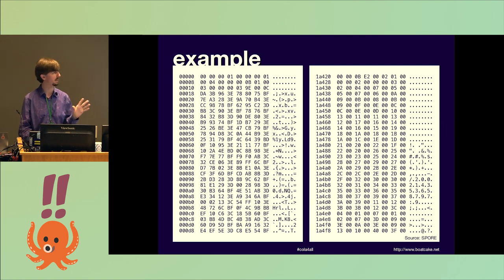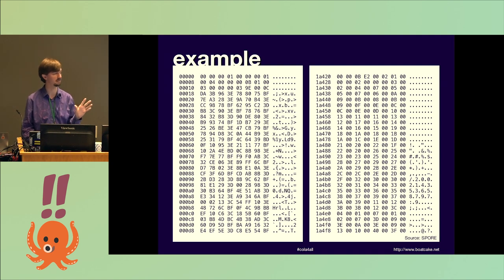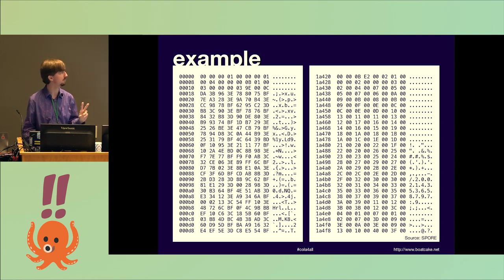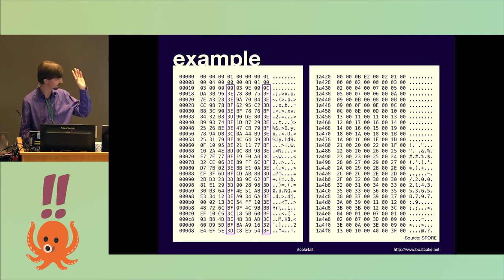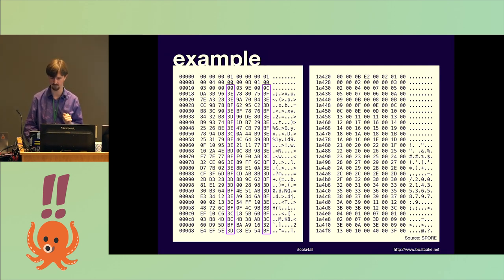I'm going to give you this example now. By the end of the talk, hopefully I'll have given you enough information that you can figure out what this actually is, or at least what type of file it is. I'll give you two hints now: one is these two columns, and the other is that the numbers on the right have a certain pattern to them. I'll give you a few seconds.